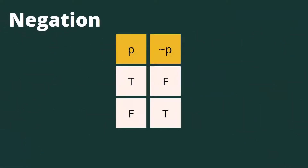The first one we're discussing is what we call the negation. Given a statement such as statement p, a statement could have two values: true or false. T stands for true and F stands for false. So when we negate this statement, we get the other value. If it's true, when you negate that, it would be false, and false would be true. That's how it works when it comes to negation.